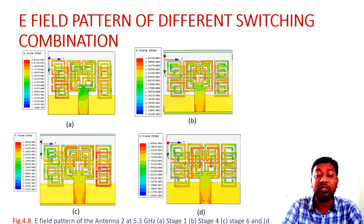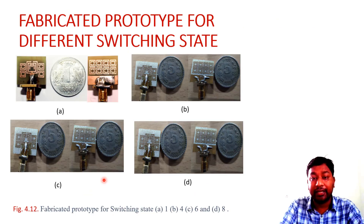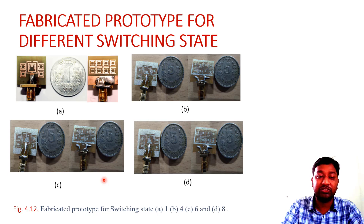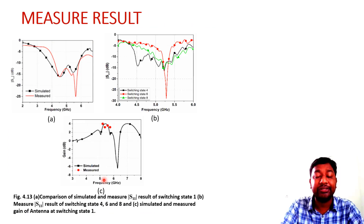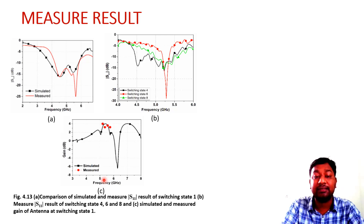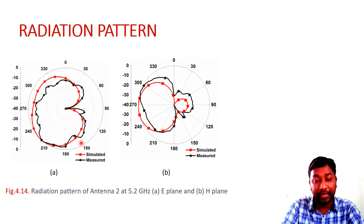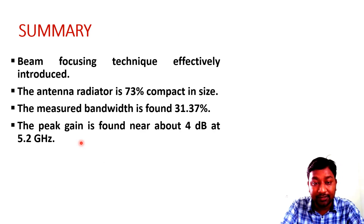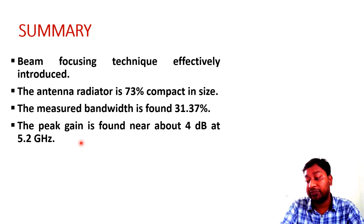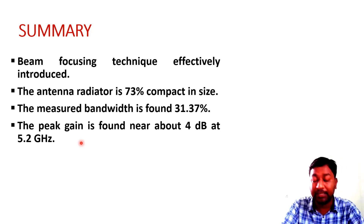We fabricated the design and measured it for different switching combination states. Results show coverage at all required frequency bands, and due to beam focusing, the antenna gain also increases in that direction. In the earlier case, gain was about 2 dB, but with beam focusing the gain reaches approximately 4 dB. The measured bandwidth was found to be 31.37% and the peak gain is 4 dB.